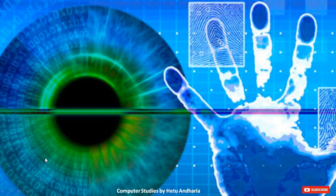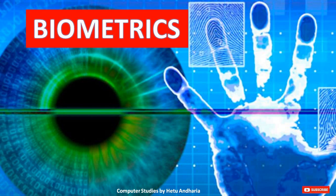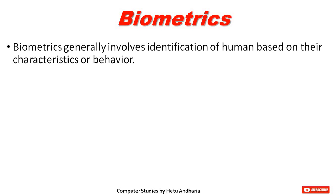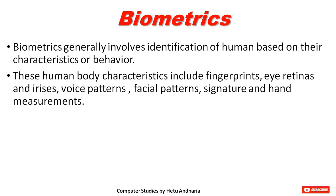The topic we are going to discuss in today's video is biometrics. It's a very common word used nowadays and most people know its meaning, but in this video you will come to know many interesting things you may not know yet. Biometrics generally involves the identification of humans based on their characteristics or behavior. Human body characteristics include fingerprints, eyes, retinas and iris, voice patterns, facial patterns, signature, and hand measurements.